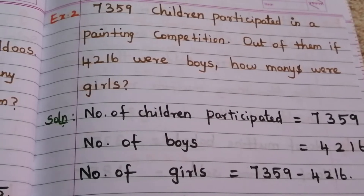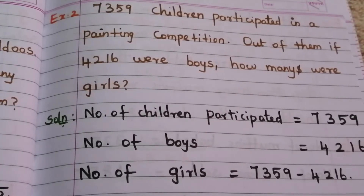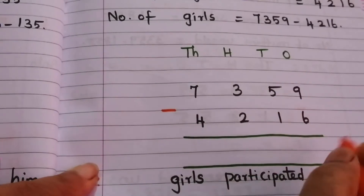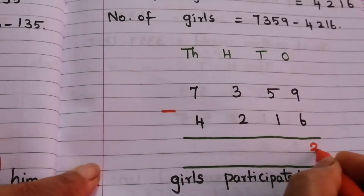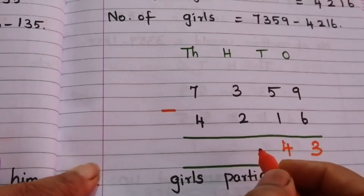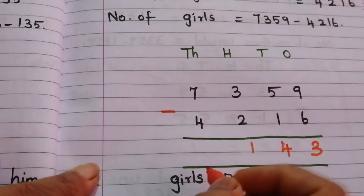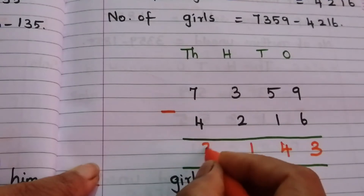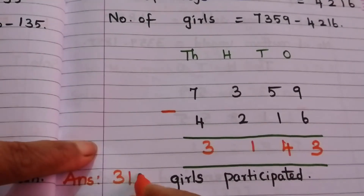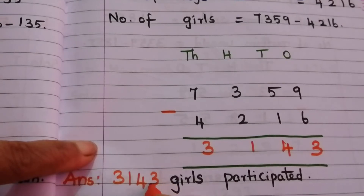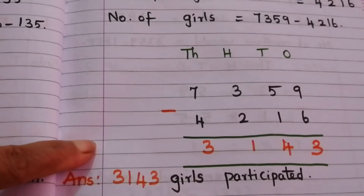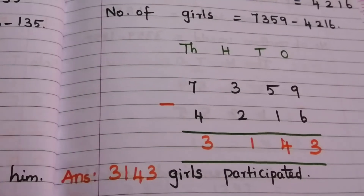Start from the ones place: 9 minus 6 = 3, 5 minus 1 = 4, 3 minus 2 = 1, 7 minus 4 = 3. So the answer is 3,143. Three thousand one hundred forty-three girls participated in the painting competition.